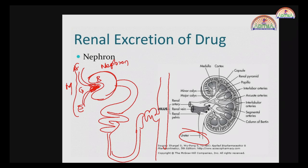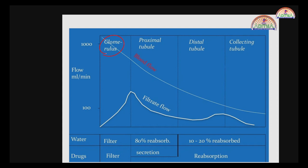How is glomerular filtration or excretion of the drug carried out in the kidney? We have the glomerulus, and the tubule is divided into the proximal convoluted tubule, distal convoluted tubule, and collecting ducts. The blood flow is highest in the glomerulus, which acts as a driving force for filtration. As blood passes through the proximal tubule, collecting tubules, and distal tubules, the blood flow slowly declines. This difference in pressures helps in filtration of substances.